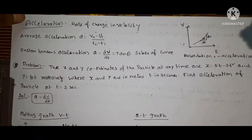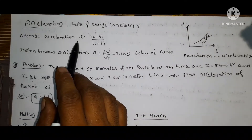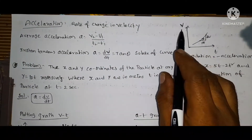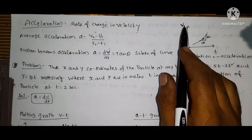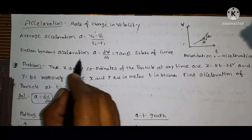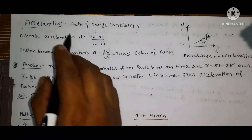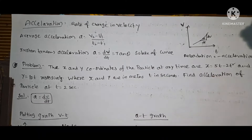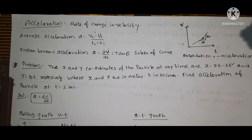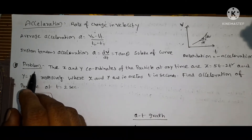Next core topic: acceleration. The rate of change of velocity. Average acceleration equals change in velocity divided by change in time. From the velocity-time graph, the slope gives instantaneous acceleration: a equals dv/dt equals tan theta. Important: retardation means negative acceleration — the body decelerates, moving opposite to the direction of velocity.